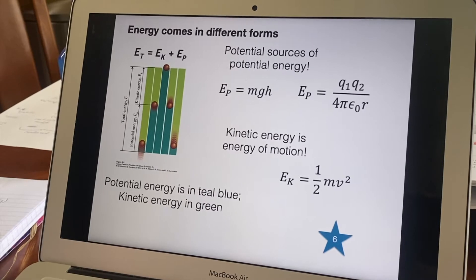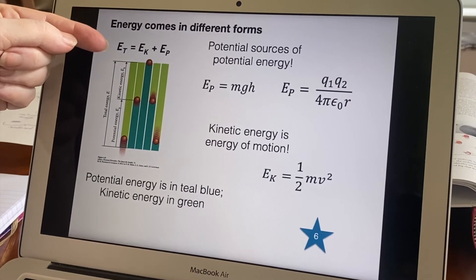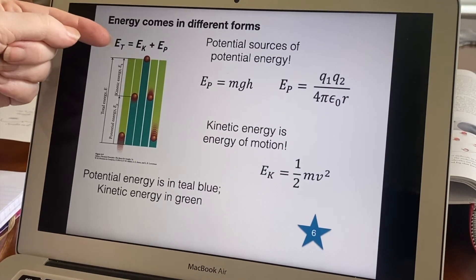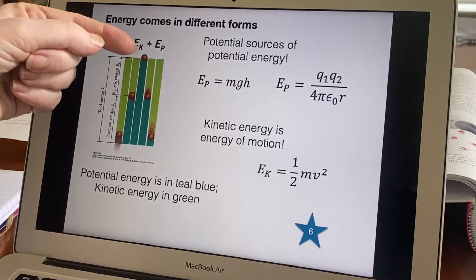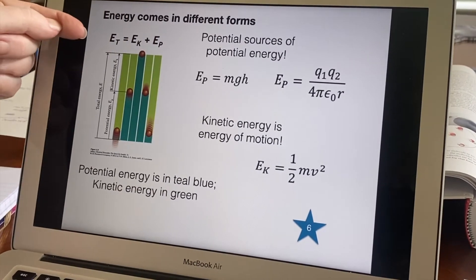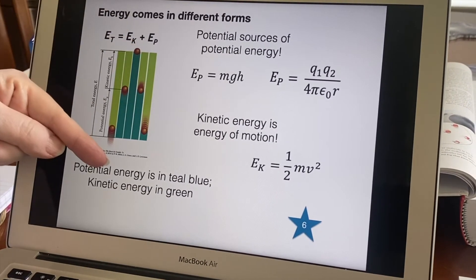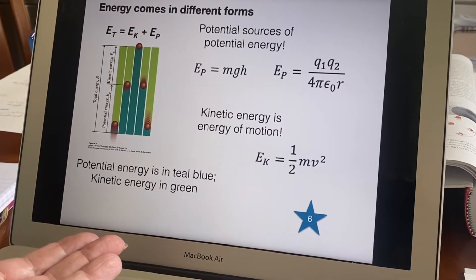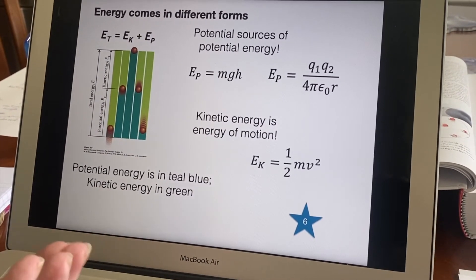Energy itself comes in a lot of different forms. Here we have an example saying that the total amount of energy is made out of the kinetic energy and the potential energy. This is a ball being thrown up in the air. At first it is not very high off the ground but it's been thrown up with a lot of speed.